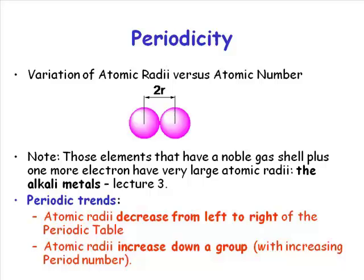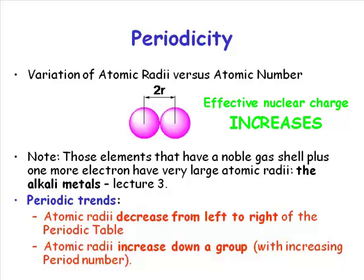The atomic radii decrease from left to right in the periodic table. As you add protons, the nuclear charge increases. But as you add electrons, there is some shielding of other electrons occurring, but not enough to compensate for the increasing nuclear charge. So as you move from left to right across the periodic table, because of this shielding factor, the effective nuclear charge increases from left to right across the periodic table.